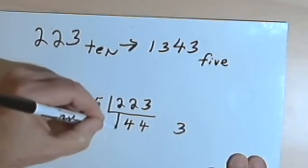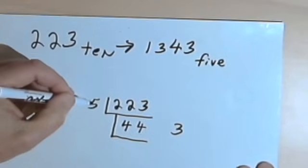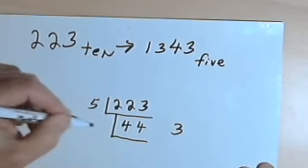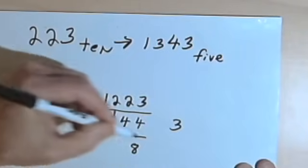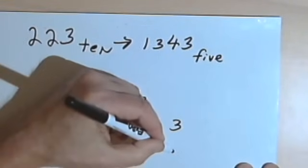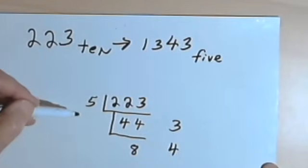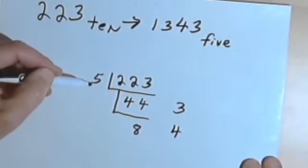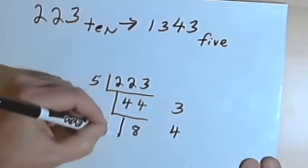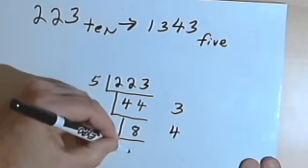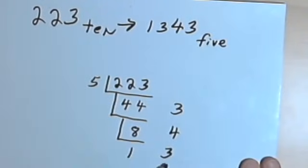Now I'm going to take that 44 and divide that by 5. 44 divided by 5 goes in 8 times with a remainder of 4, so I'm going to write that 4 over to the right. Then I want to divide 5 into the 8. 5 goes into 8 one time with a remainder of 3, which I'll write to the right.